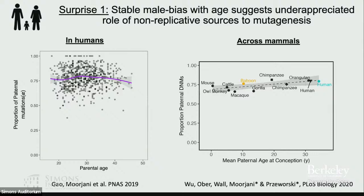We can also look at this across different species. Each point represents pedigree data for that species, showing the proportion of paternal mutations at average age. Despite these species ranging in different parental ages, generation times, and mating systems, the male bias in mutation rate is roughly constant with age. This suggests that mutations not only occur due to replication errors but also in large part due to non-replicative sources or DNA damage — both endogenous and exogenous — mirroring findings from cancer genomics.